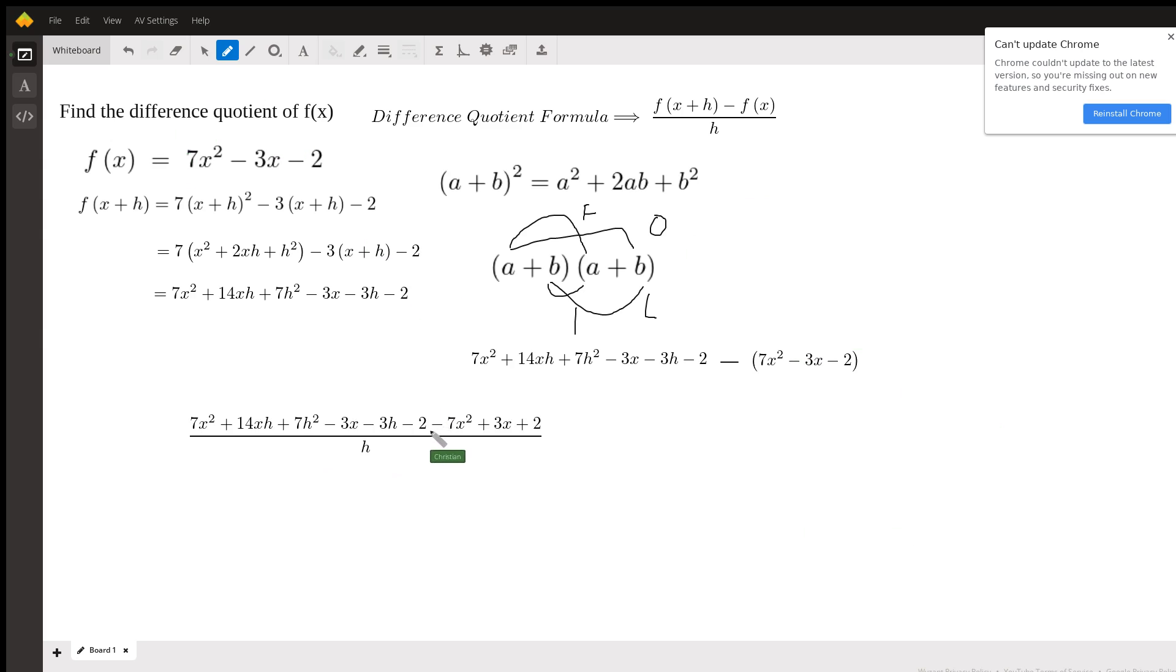So now what we have to do is look at what terms are common. I see 7x² and -7x², so those two would cancel out and just equal zero. Then I see -3x and 3x, so those two add together to get zero. -2 + 2 is zero.